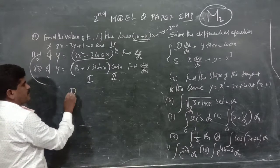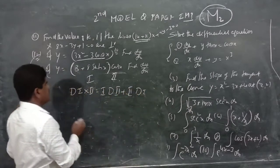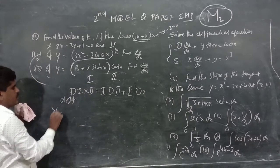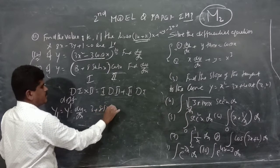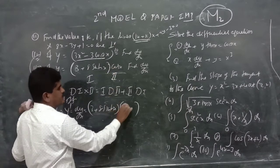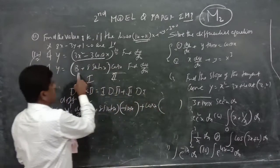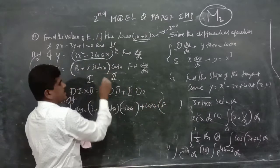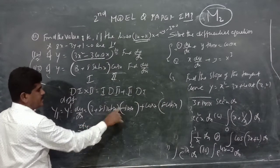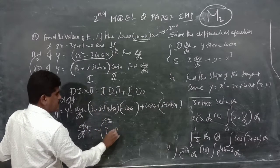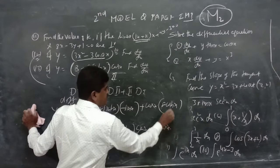Thirteenth problem: y equals (3 plus 8 sinh x) times cos x. By the product rule, the derivative of first times second equals first times derivative of second plus second times derivative of first. So dy/dx equals (3 plus 8 sinh x) times (minus sin x) plus cos x times (8 cosh x).